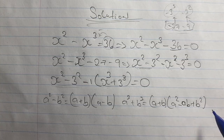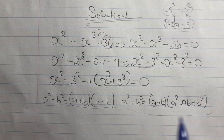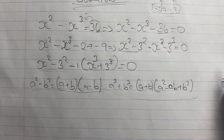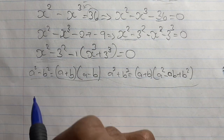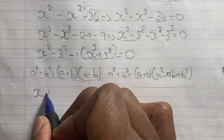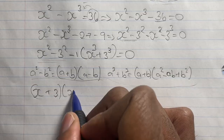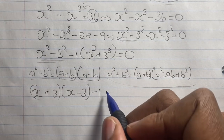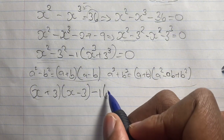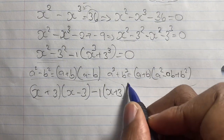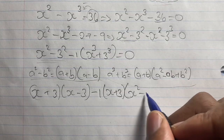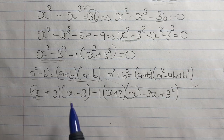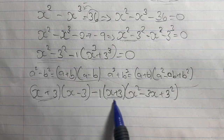Now that we recall how to expand the difference of two squares and the sum of two cubes, we rewrite our equation. The difference of two squares gives us (x + 3)(x − 3). Then for the sum of two cubes, multiplied by negative 1, we have negative 1 times (x + 3)(x squared minus 3x plus 3 squared).